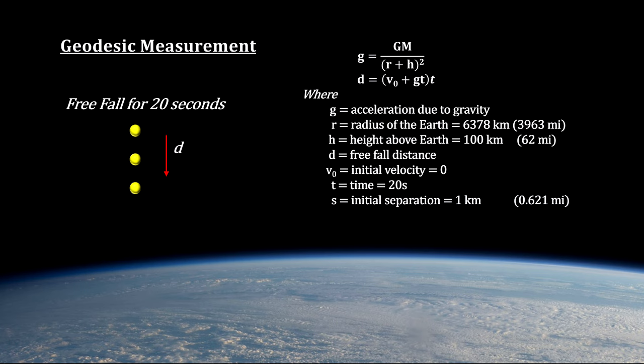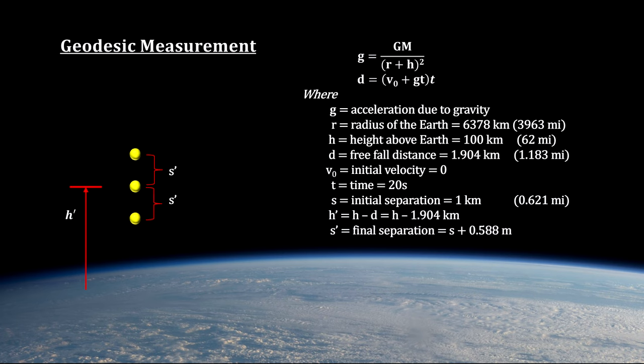Because the particles closer to the Earth feel a slightly stronger gravitational attraction than the particles further up, they will accelerate faster. The distance between them will increase. This shows that the curvature is negative along this line in space above us.